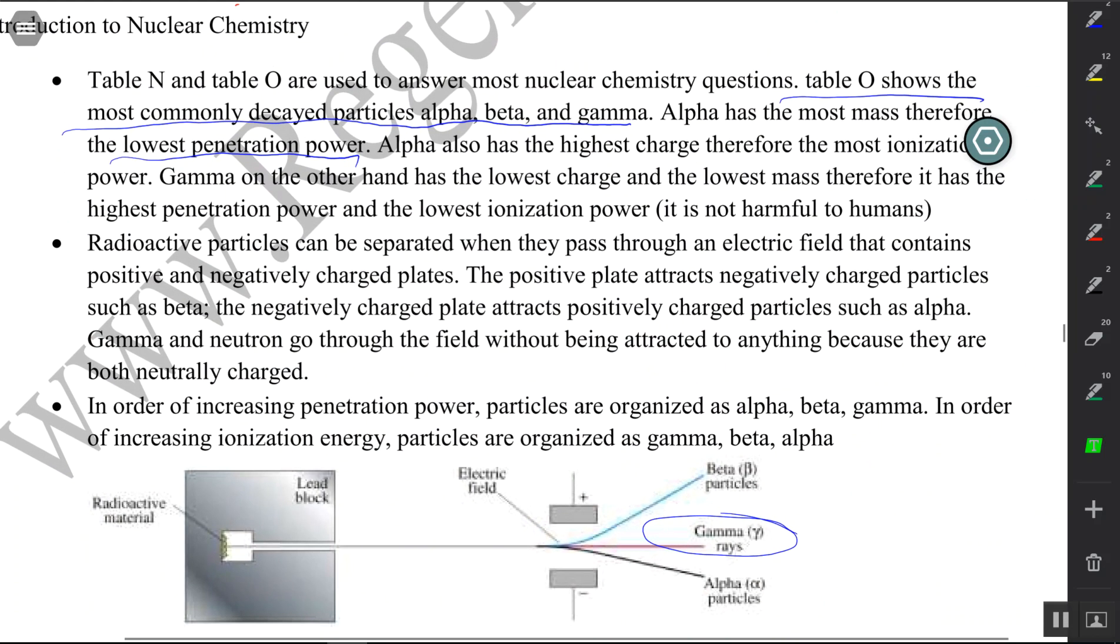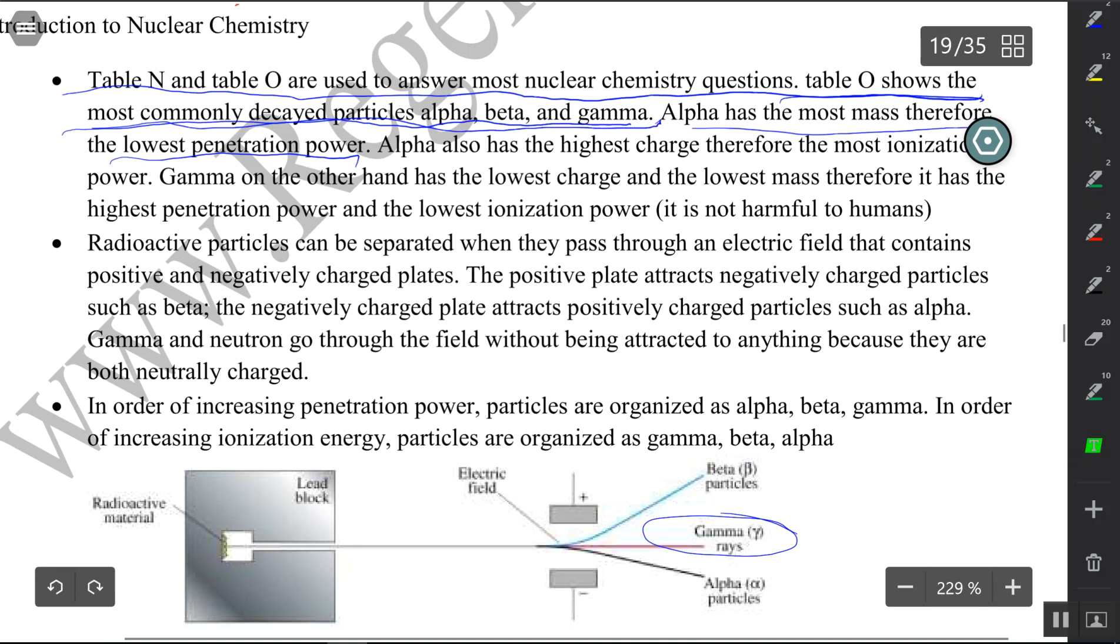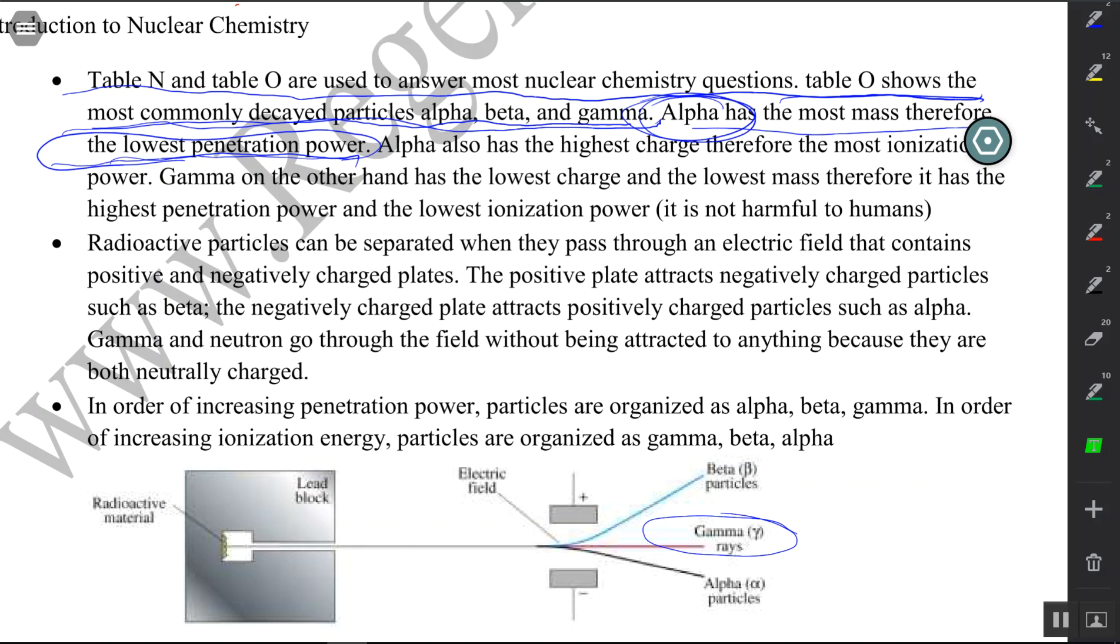Table N and Table O are used to answer most nuclear chemistry questions. Table O shows the most commonly decayed particles: alpha, beta, and gamma. Alpha has the most mass therefore the lowest penetration power. It makes sense - if something is very big, it would have very low penetration power. Think of a very big object that you're trying to push through a small window. Obviously it will not be able to penetrate its way through.